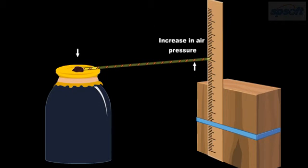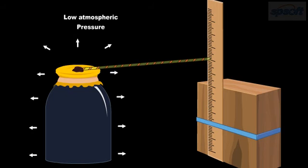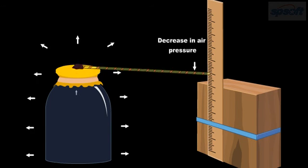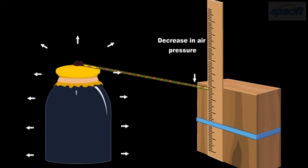On the contrary, if atmospheric pressure decreases, the balloon will not be deflated. Sometimes, the pressure becomes so low that it is less than air pressure inside the bottle. Then the balloon will be inflated and the straw would move down, indicating decrease in pressure.